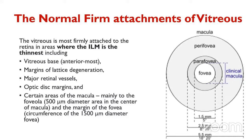This shows normal foveal anatomy and normal vitreous attachments. The vitreous is most firmly attached to the retina where the ILM is the thinnest — that is the vitreous base (anteriormost), margins of the lattice degeneration, major retinal vessels, optic disc margins, and areas of the foveola. The foveola is a 500-micron diameter area in the center of the macula, and the margins of the fovea have a circumference of 1500-micron diameter.